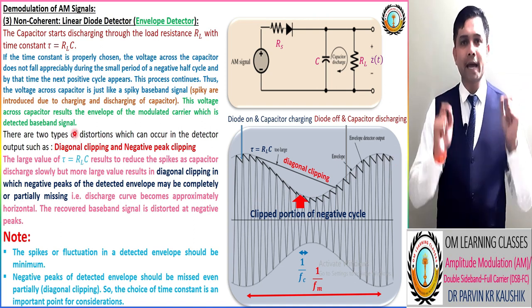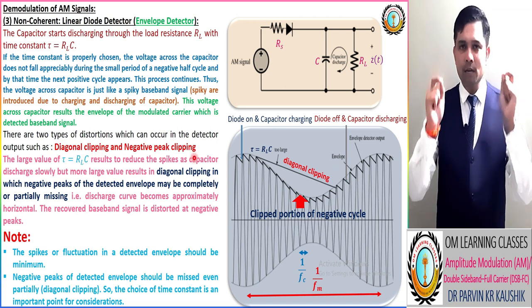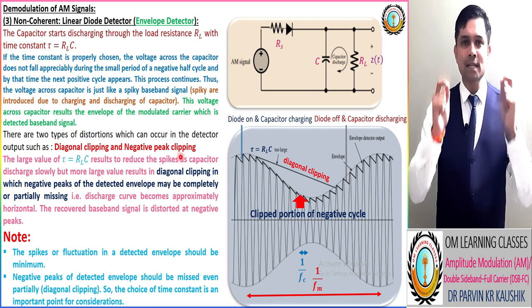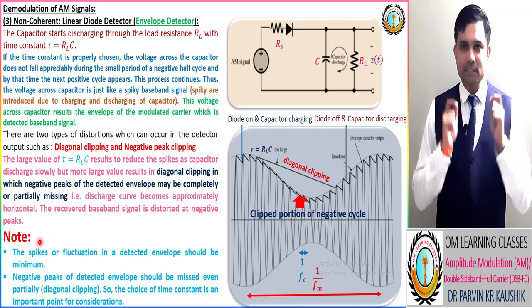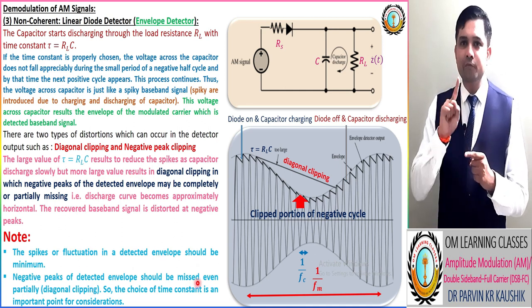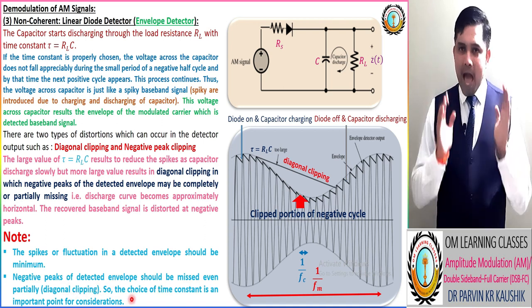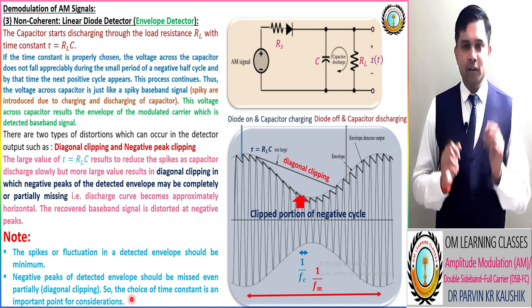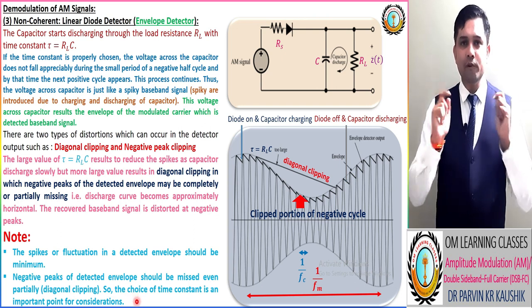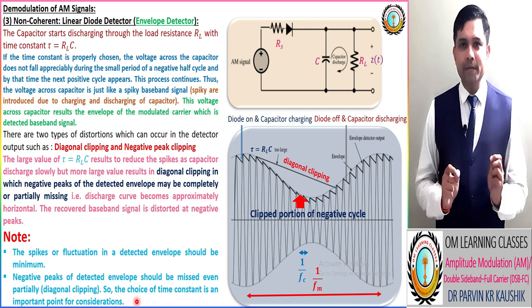According to the behavior of the envelope detector, two types of distortion occur in the detected output: one corresponding to diagonal clipping and another corresponding to negative peak clipping. Both these clipping types will be discussed in our next lecture. Diagonal clipping is very important for exam purposes as well as for competitive exams. With this, we complete the behavior of the linear diode detector, which is also known as the envelope detector.